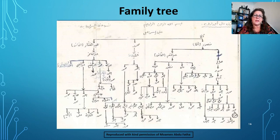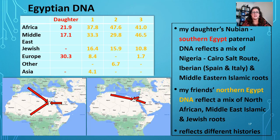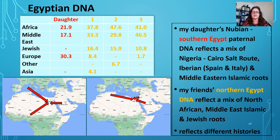This is an example of a family tree, shared with permission. Something quite interesting with Egyptian family trees is that the ladies aren't named. Looking at Egyptian DNA, my daughter's DNA came back as Nigerian, Middle Eastern, and Southern European — Spain and Italy. Some friends who are Egyptian and come from Ismailia and Cairo have a slightly different makeup, with North African, Middle Eastern and Jewish DNA. This reflects a completely different story — a different history, different travel routes, different trade routes and different religions having a background here.